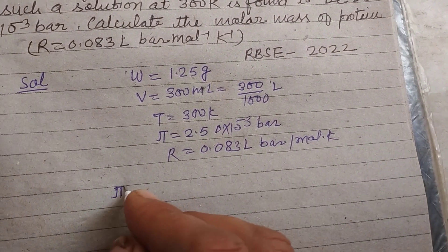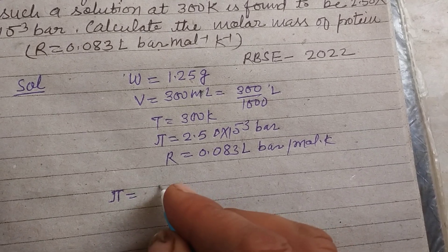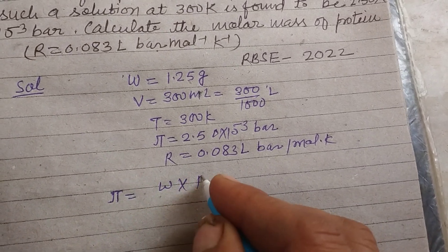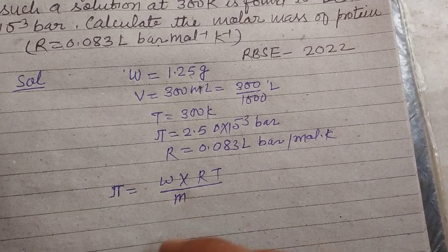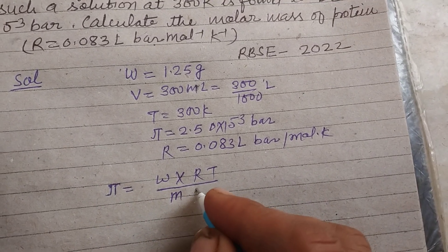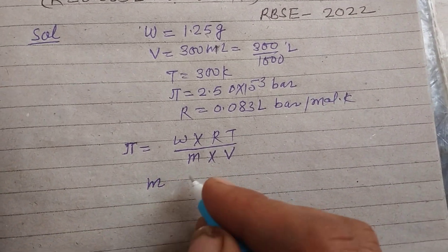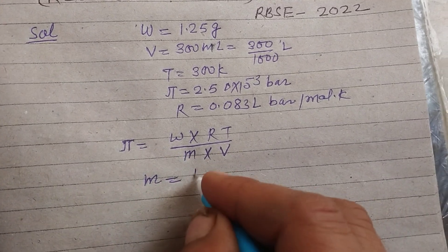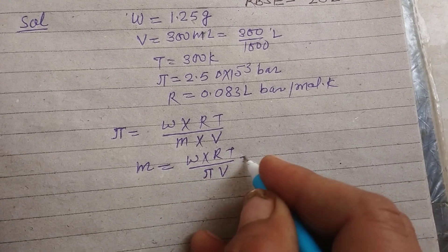You know that osmotic pressure is W into R into T over molar mass of the solute into volume in liter. So here molar mass equals W into RT upon pi into V.